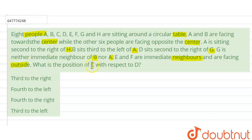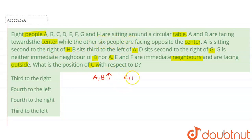What is the position of C with respect to D? So let me explain the solution. A and B are facing towards the center, while the remaining 6 — C, D, E, F, G, and H — are all facing away from the center, i.e., outside.